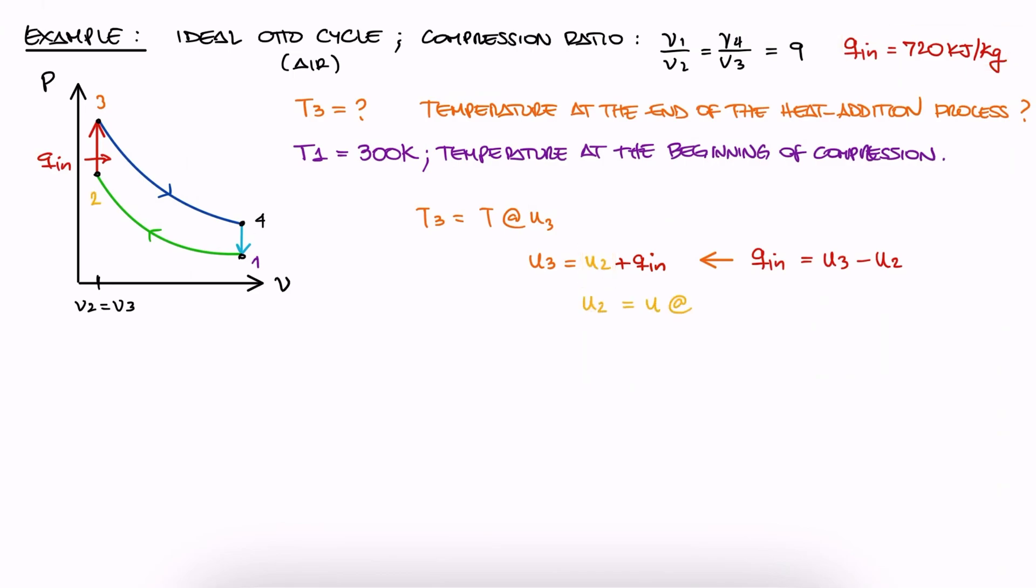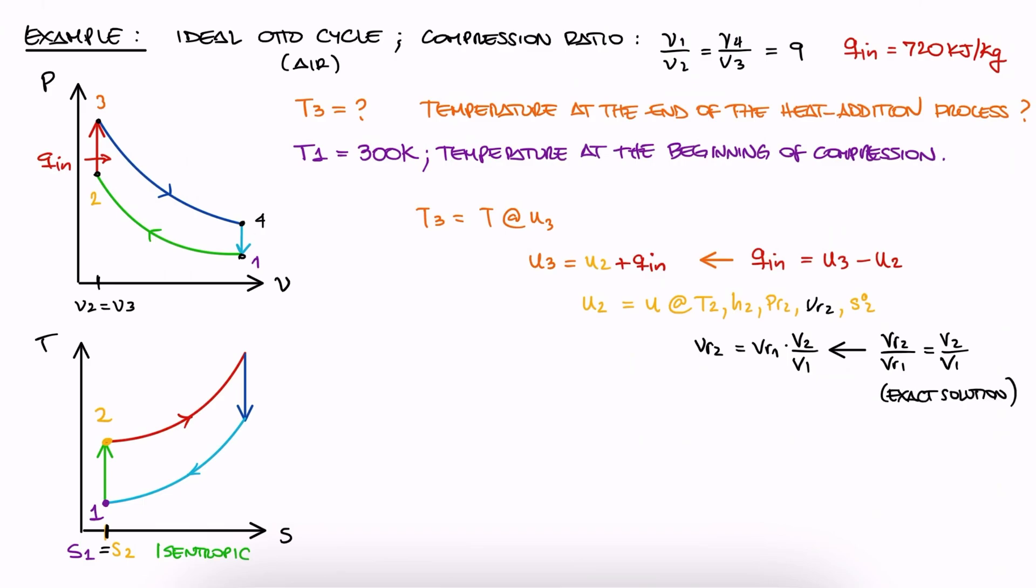We do still need to find U2. To find U2, we're going to need one of the properties from the table. And because we know that the compression between 1 and 2 is isentropic, we can use the isentropic relationship for volumes from the exact solution. This means that we need the volume ratio, but we have that from the compression ratio, and also the relative volume at 1.